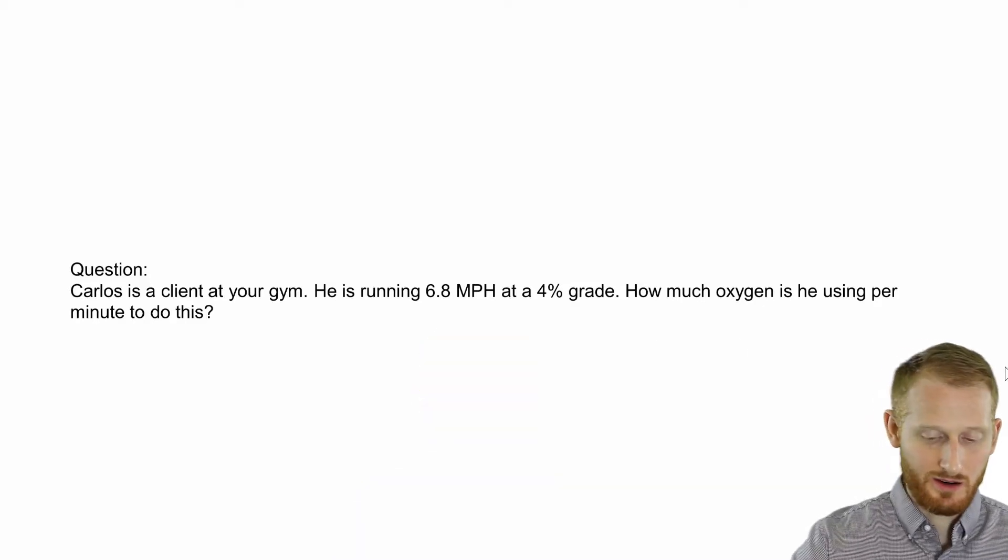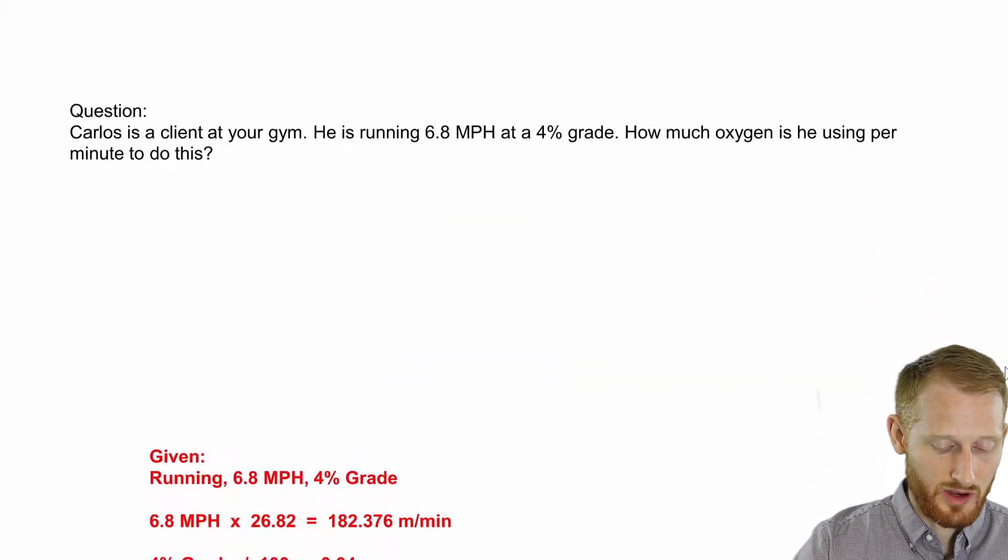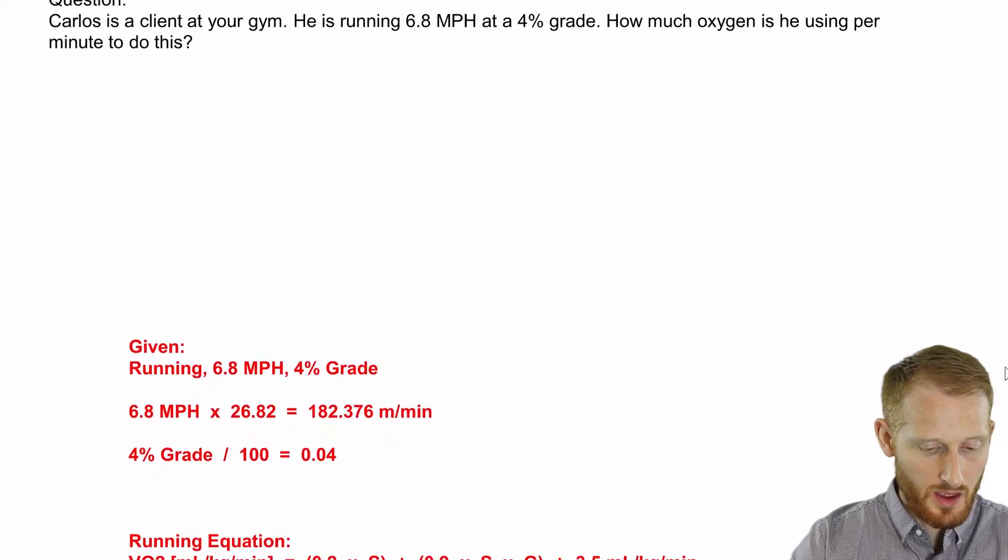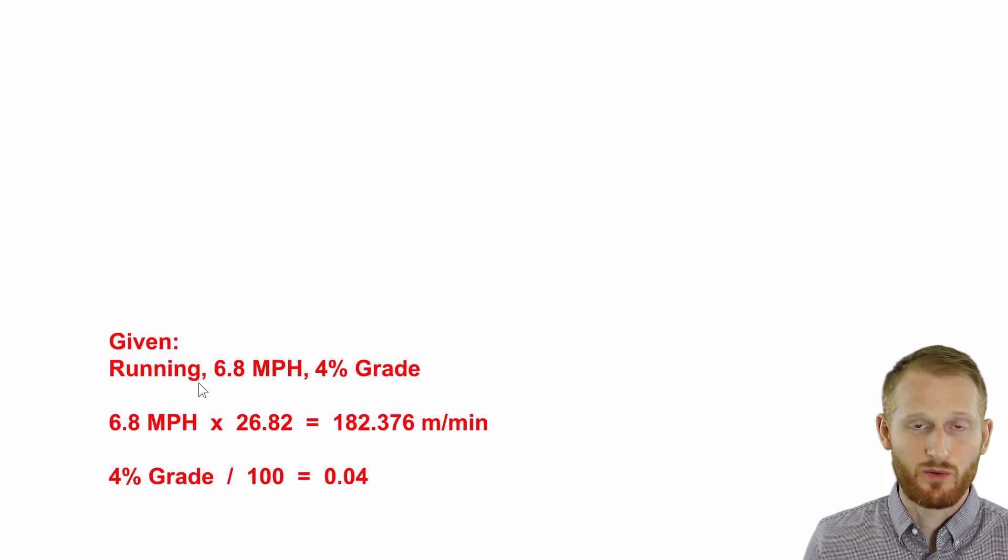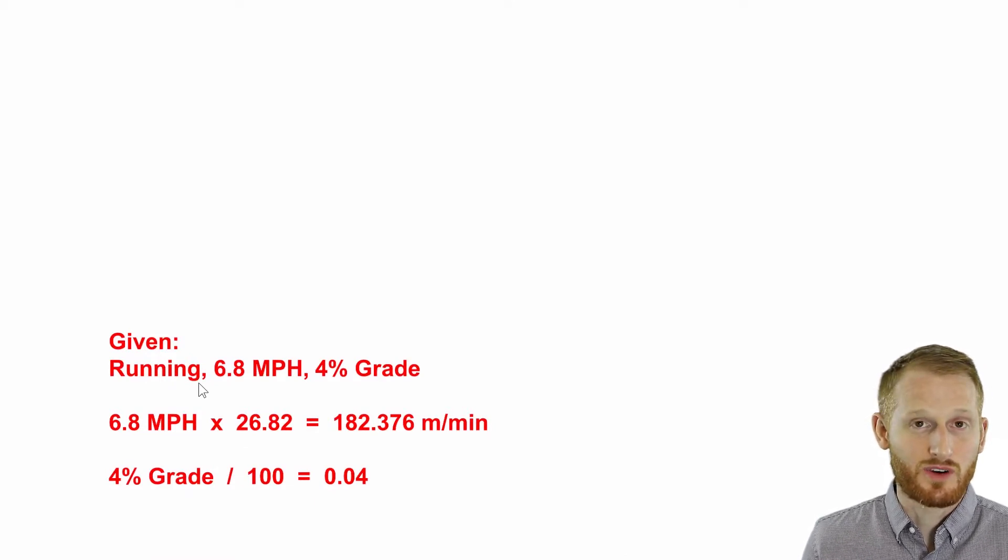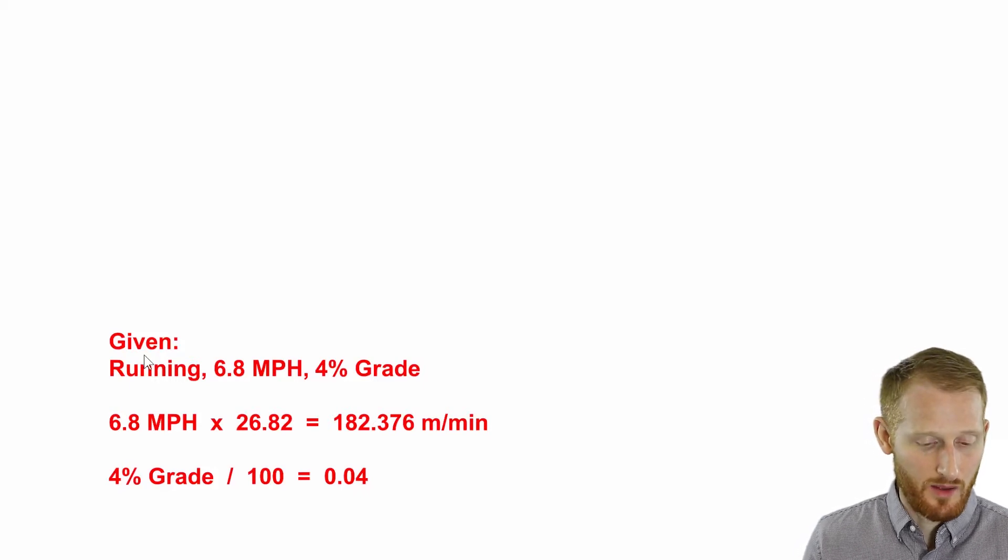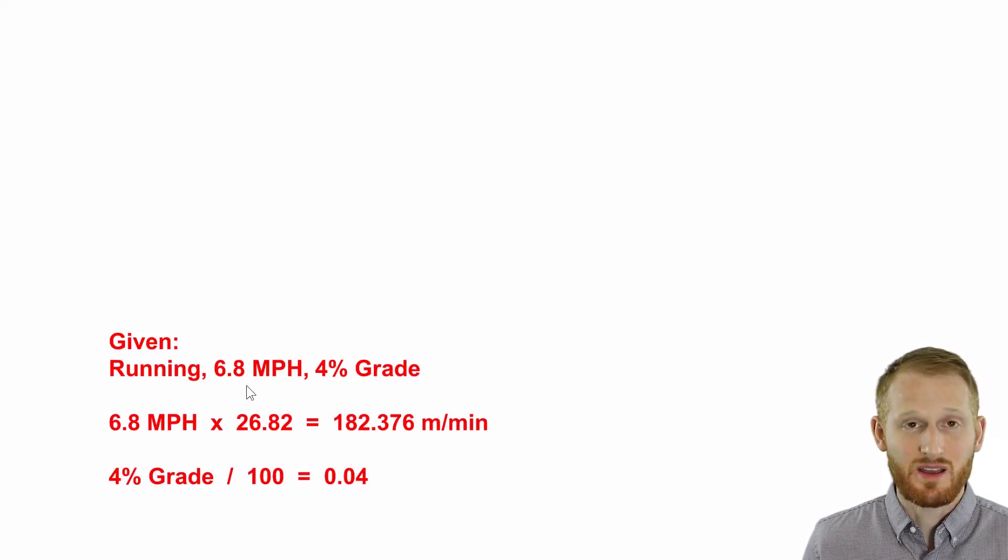So let's look at our given variables here. We know the exercise modality, which is very important for eventually picking out the right calculation to use or the right formula to use. So he is running. He's going to be running at 6.8 miles per hour and at 4% grade.